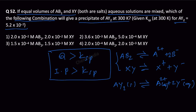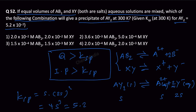If the molar concentration of AY₂ is S, then the molar concentration of A²⁺ is S and the molar concentration of Y⁻ is 2S, because of the stoichiometric coefficient 2. Therefore Ksp = S × (2S)² = 4S³. The Ksp value is given as 5.2 × 10⁻⁷, so 4S³ = 5.2 × 10⁻⁷.